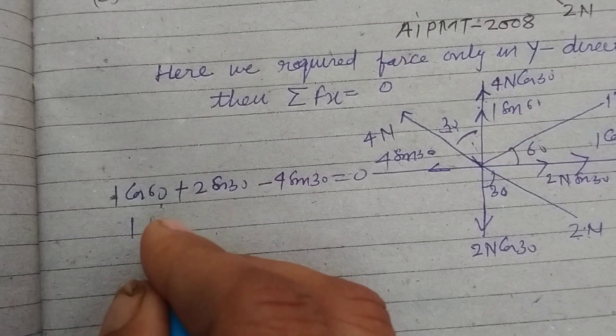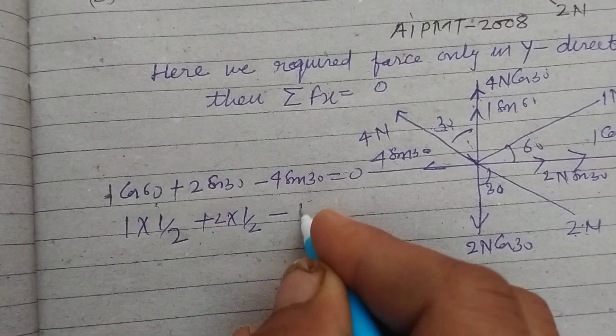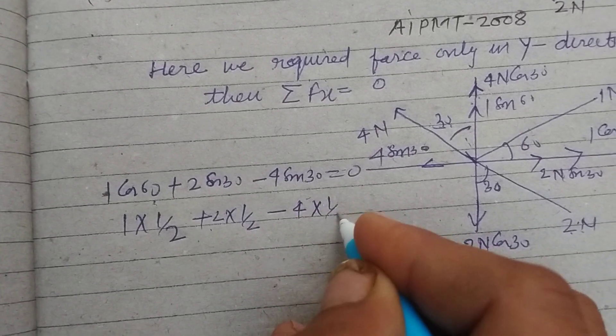1 cos 60 is 1 by 2, 2 sin 30 is 1 by 2, 4 in 2 sin 30 is 1 by 2.